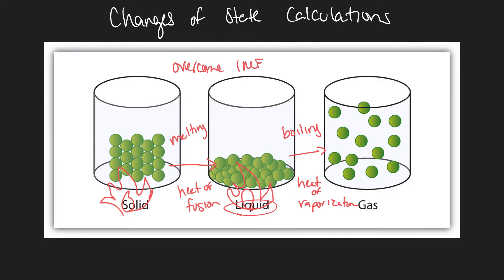If you're cooling something — going this way — the intermolecular forces are being reestablished. Going from a gas, if you take energy away from the substance, you allow it to get slower and slower. Once it gets slow enough, the intermolecular forces reestablish themselves, and it goes from gas to liquid by condensation, and then liquid to solid by freezing.